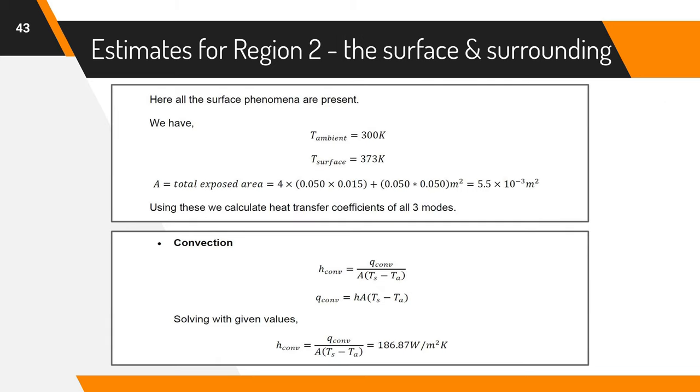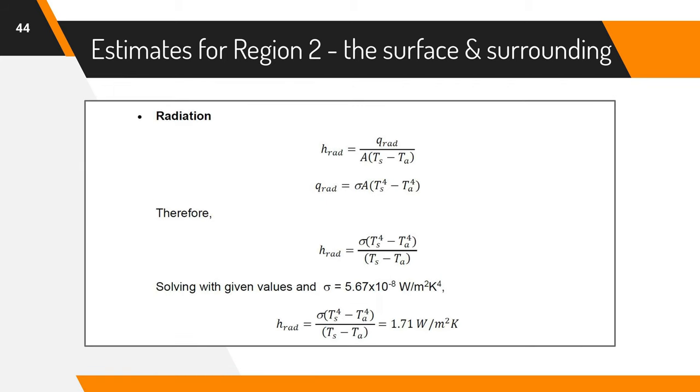For region 2, we have to calculate the total exposed surface area. Here, we need to calculate the heat transfer coefficients for all three as of radiation, conduction and convection are possible. Solving for H in the following manner gives a value of 186.87 Watt per m² Kelvin. For radiation, H is equal to σ into Ts⁴ minus Ta⁴ upon Ts minus Ta where σ is the Stefan-Boltzmann constant. Solving gives a radiation transfer coefficient as only 1.71 Watt per m² Kelvin.